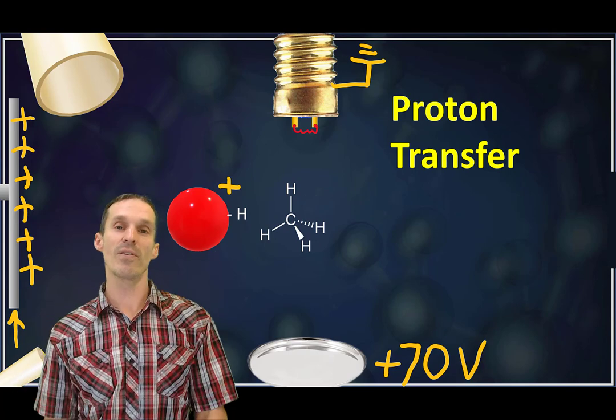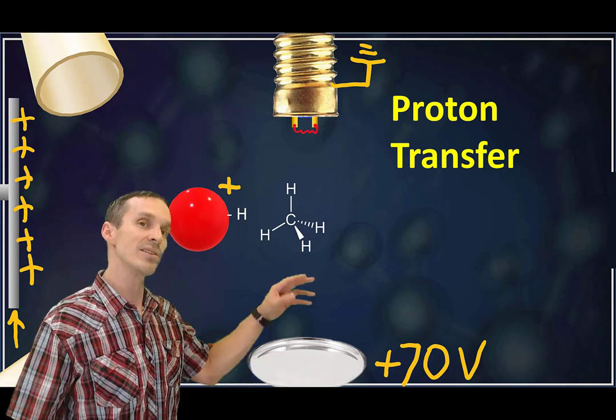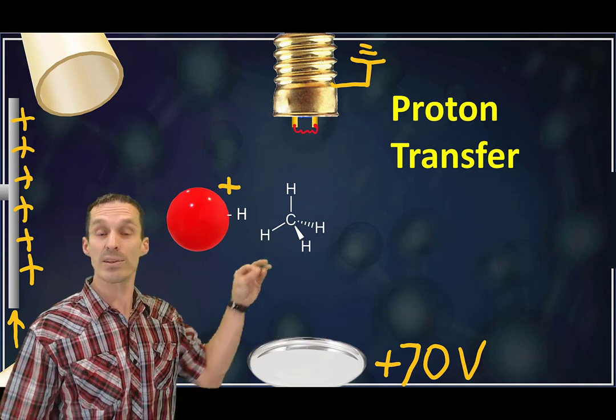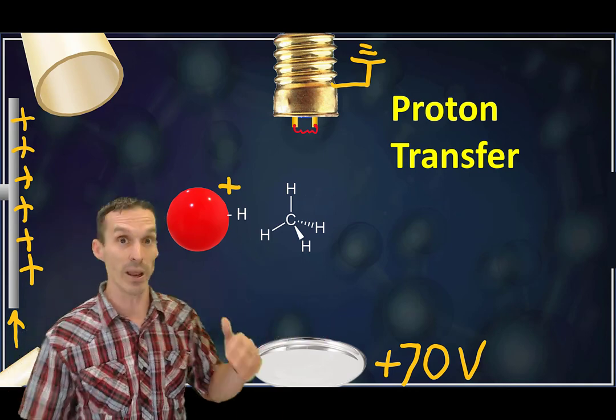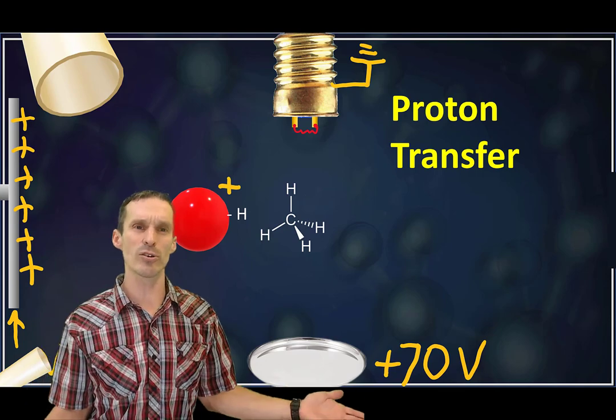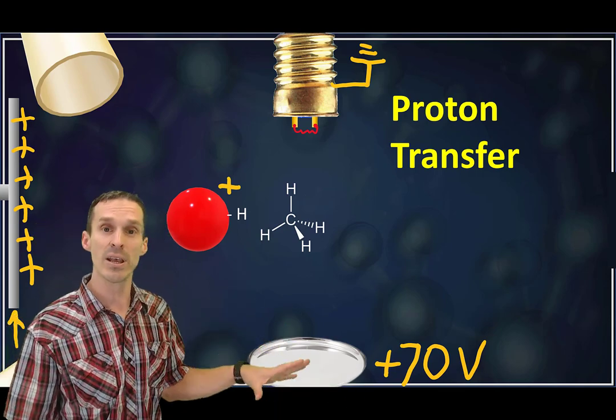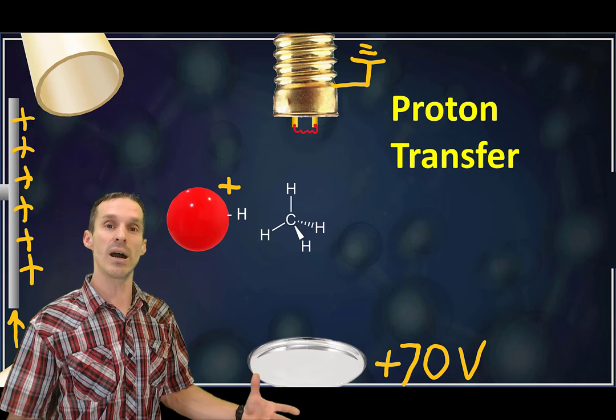This is a different form of ionization. Instead of going M+ dot, we're going M+H. It's kind of like electrospray. It is kind of like electrospray, but it happens in the gas phase and it happens using the EI source.